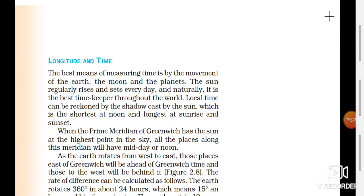We will see the relation between longitudes and time. The best means of measuring time is by the movement of the Earth, the moon, and the planets. The sun regularly rises and sets every day and is naturally the best timekeeper. Local time can be recognized by the shadow cast by the sun, which is shortest at noon and longest at sunrise and sunset.